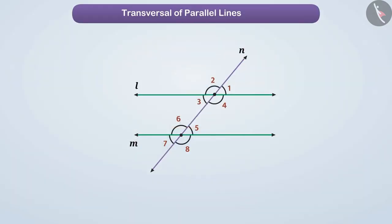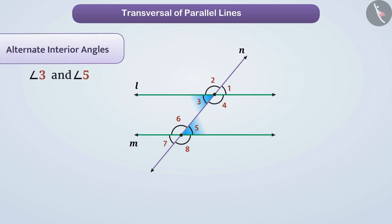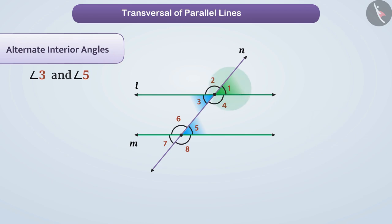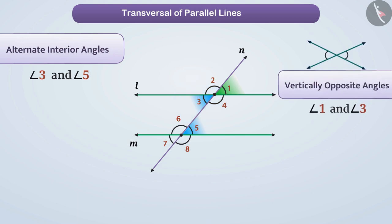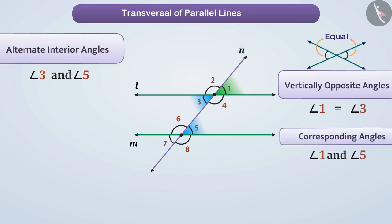Looking at this figure, can you tell what is the relation between angle 3 and angle 5? These are alternate interior angles. Angle 1 and angle 3 are vertically opposite angles, so angle 3 equals angle 1. But angle 5 and angle 1 are corresponding angles formed by the transversal of parallel lines, so they are also equal. Since angle 1 equals both angle 3 and angle 5, we can say that angle 3 is equal to angle 5.